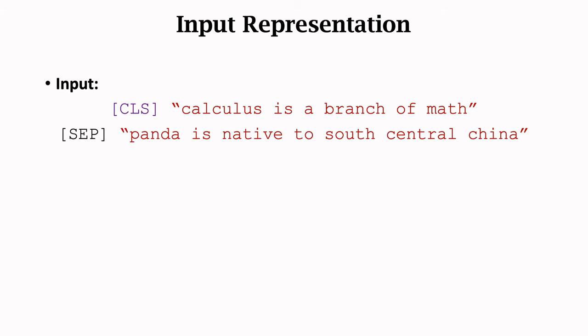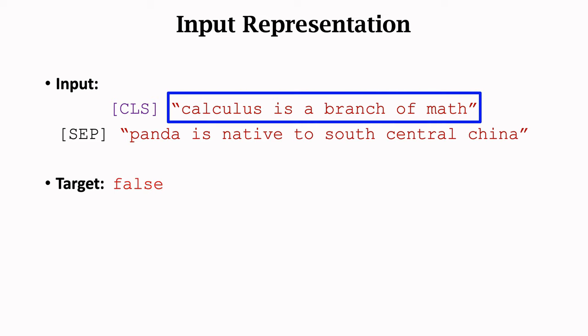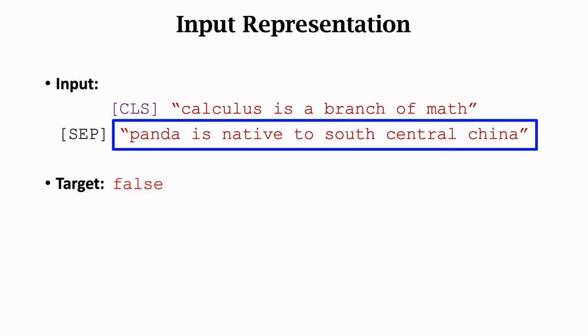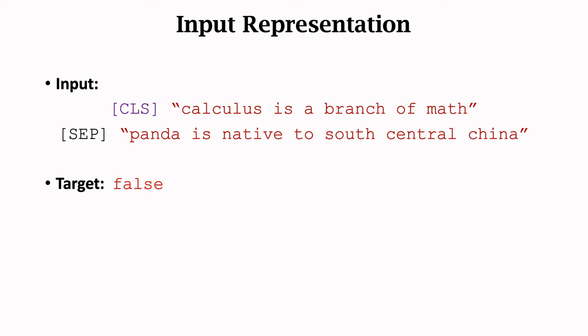Half the time, the second sentence is the real next sentence. Half the time, the second sentence is randomly selected from the entire dataset, and the target is set to FALSE. In this example, the first sentence is calculus is a branch of math. The second sentence, panda is native to south central China, is randomly sampled from the dataset. The two sentences are not actually consecutive. The second sentence is fake, and we hope the classification output is FALSE.